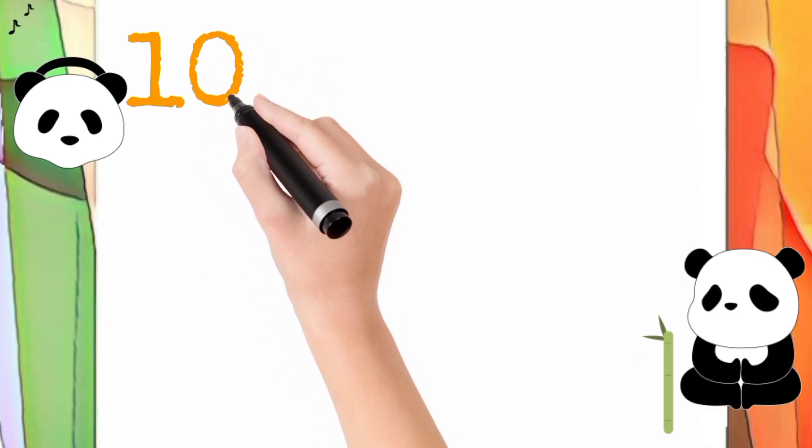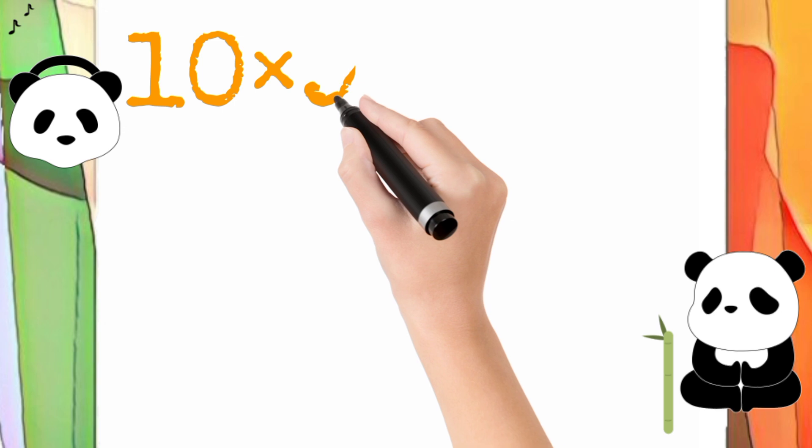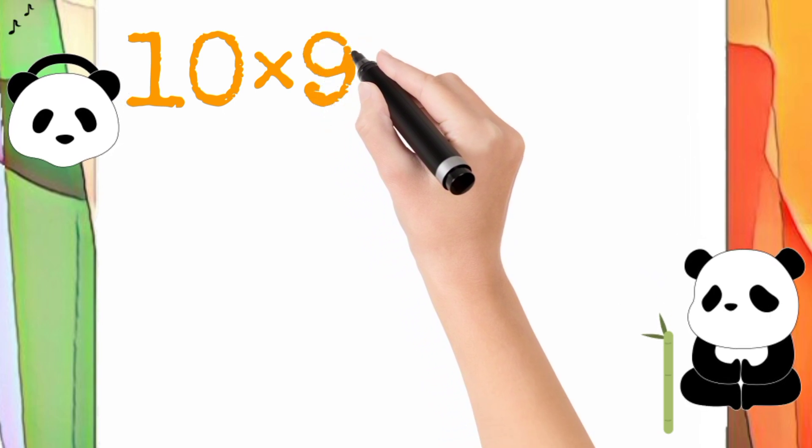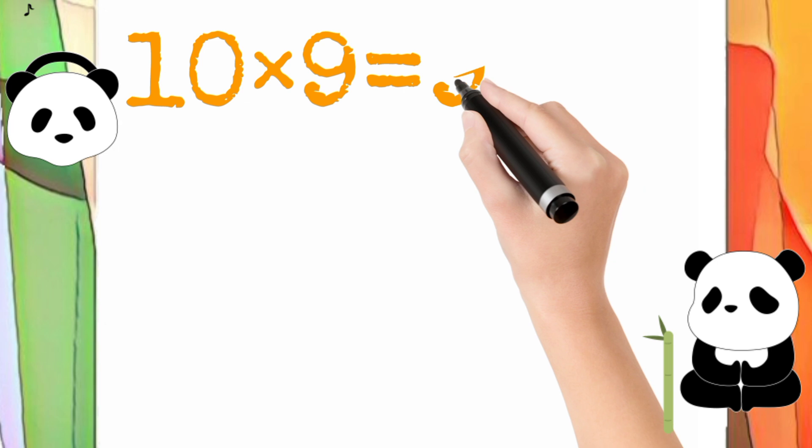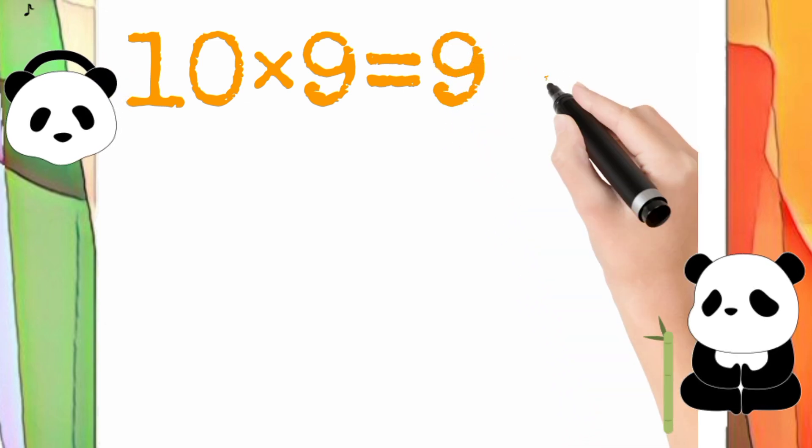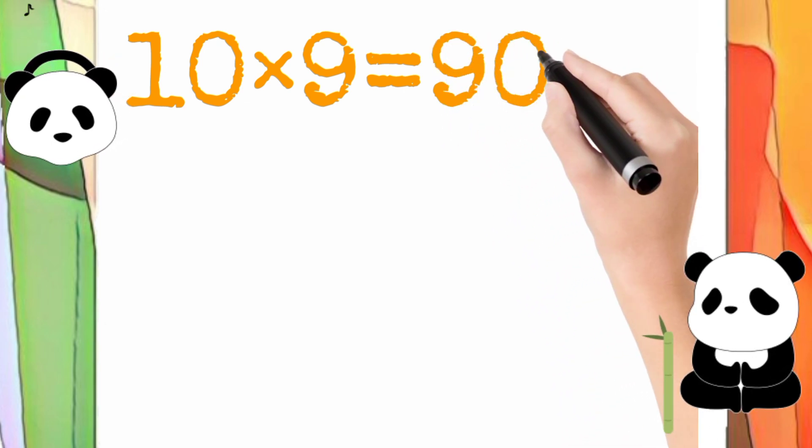10 multiply by 9 is equal to 90. So 10 times 9 equals 90.